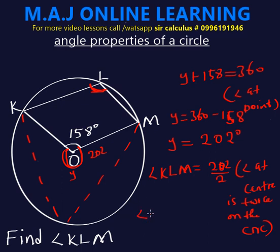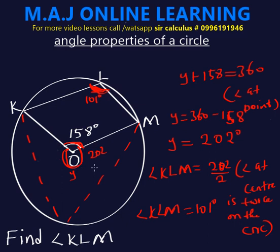So angle KLM — we divide 202 by 2 and we get 101 degrees. The angle on the circumference is 101 degrees. To verify: the angle at the center times 2 gives 202, and 360 minus 202 gives 158. So the method is: find the angle at the point, then divide by 2 to get this angle.